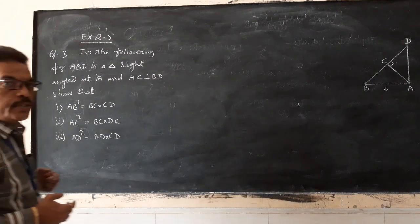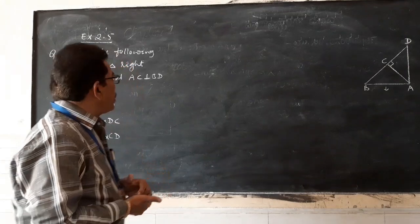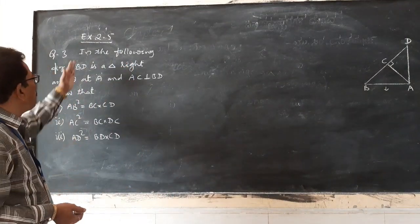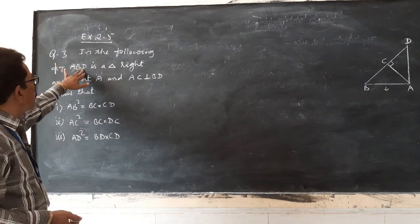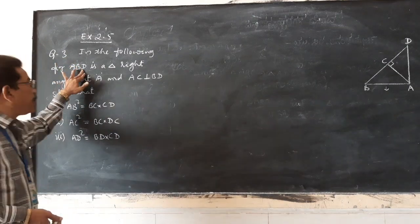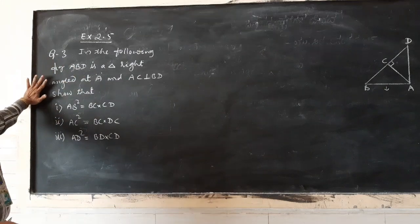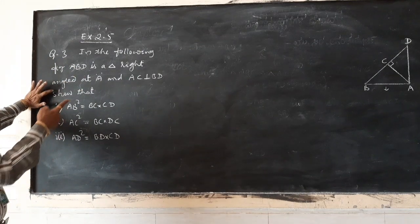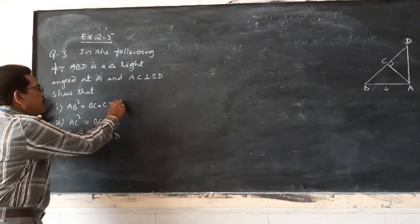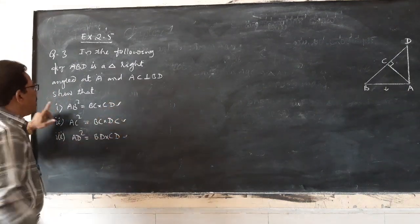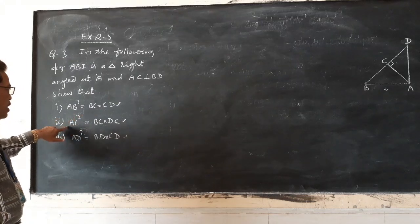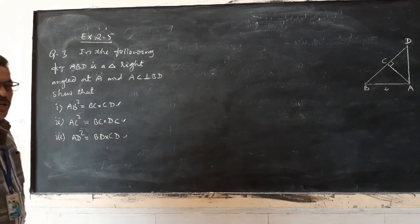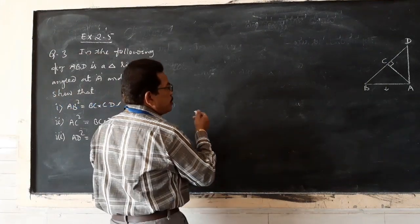Today let us continue Exercise 2.5. We have completed the three new lessons; let us continue from the third one. In the following figure, ABD is a triangle, right angle at A, and AC is perpendicular to BD. Show that: AB² = BC·CD, AC² = BC·DC, and AD² = BD·CD.